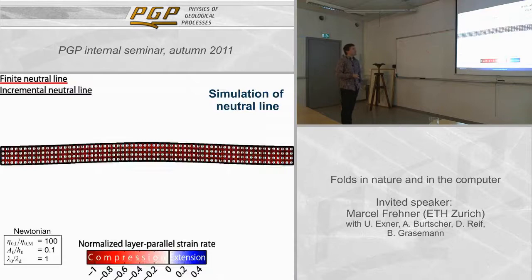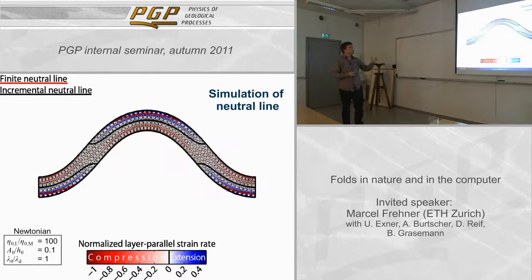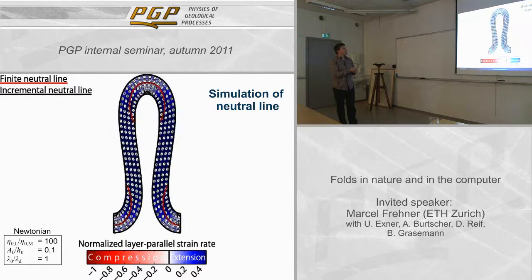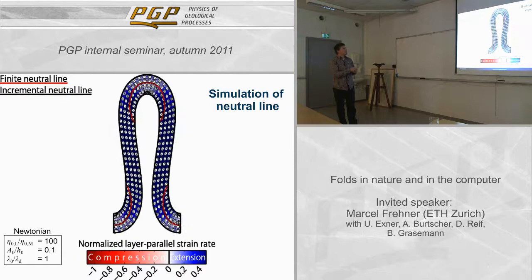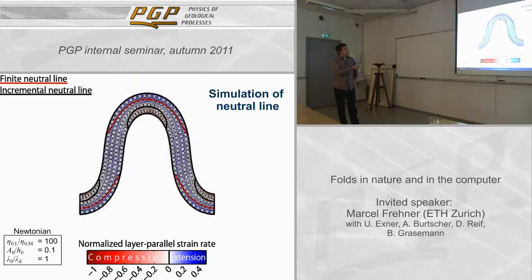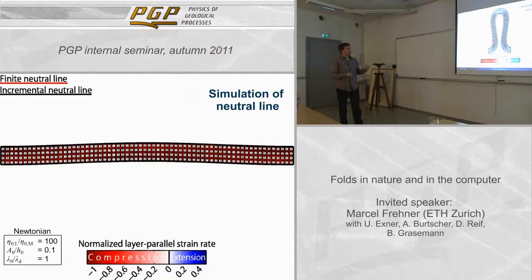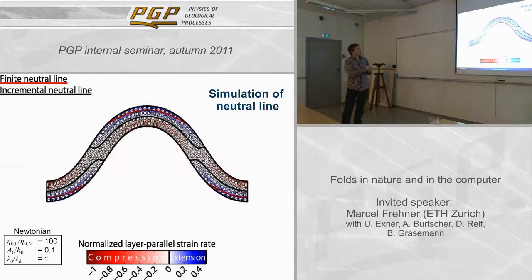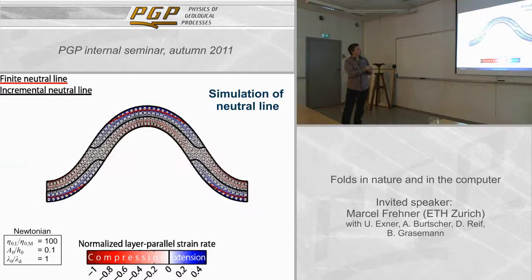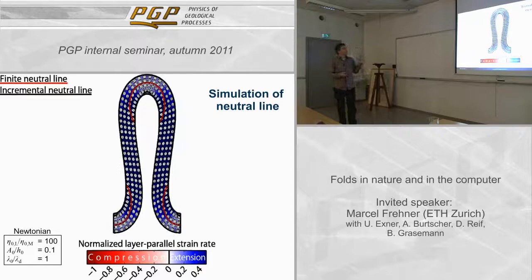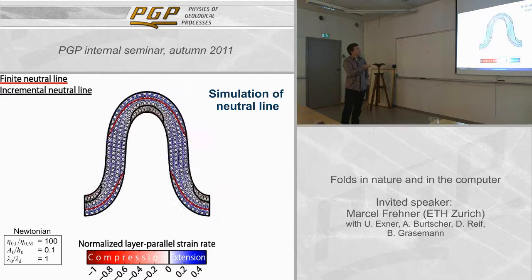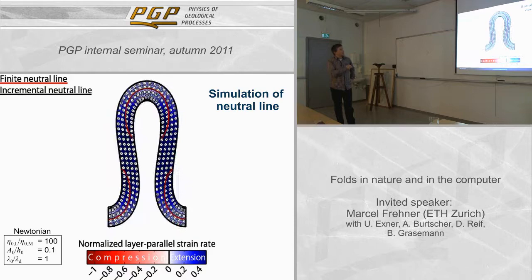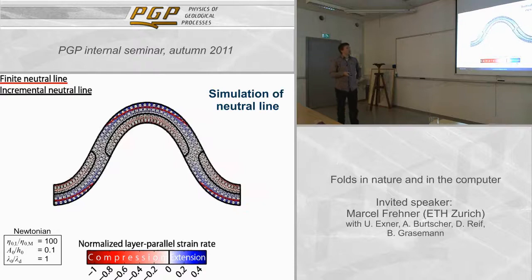With a viscosity ratio of 100 between the layer and surrounding matrix, the incremental neutral line (black) develops at the outer arc and migrates from the outer toward the inner arc with increasing deformation. The same occurs for the finite neutral line (red): it also develops at the outer arc and migrates toward the inner arc. Importantly, these neutral lines are not continuous from the synform to the antiform, as was assumed in tangential longitudinal strain theory — this is not the case in a mechanically calculated fold.